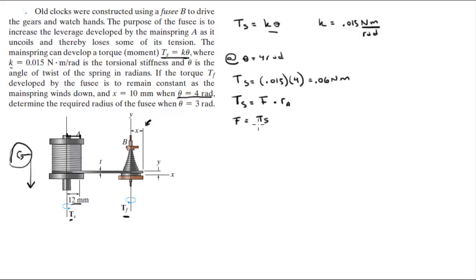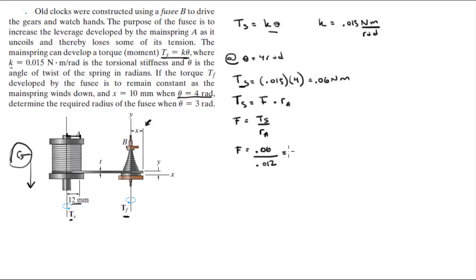F = Ts / ra = 0.06 divided by the radius of A, which is 12 millimeters, converted to meters: 0.012. So F = 5 Newtons. This is all at θ = 4 radians.